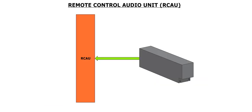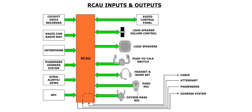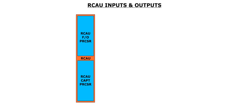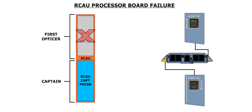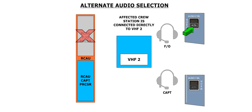The heart of the communications system is the remote control audio unit, or RCAU. The RCAU processes audio signals from the radios, the interphone, as well as alerts from the flight warning system, then directs those audio signals to their corresponding outlet, such as the loudspeaker or the headset. The RCAU consists of two electronic processing boards. If an RCAU processor board loses power or fails, an amber fault caption will illuminate on the related audio 1 or audio 2 select push button, located on the far side of the instrument panel in front of each crew member. Releasing this push button bypasses the failed processor board so that only the associated communications radio is available.